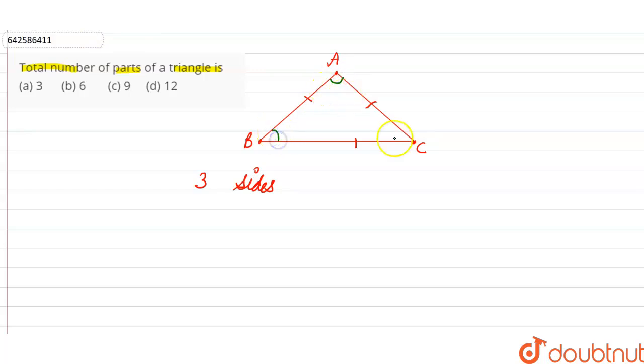So there is one angle, two angles, and three angles. Triangle has three angles and three sides. So total parts will be equal to three plus three equals six. So we can say that total number of parts a triangle can have is six.